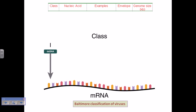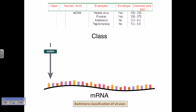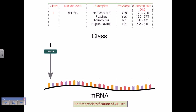Class 1 is the double-stranded DNA containing viruses. The process of mRNA production from these viruses is very basic and simple — using RNA polymerase, specifically a DNA-dependent RNA polymerase, which produces mRNA from DNA via general transcription. Examples include herpesvirus, poxvirus, adenovirus, and papillomavirus. All of them are important viruses.